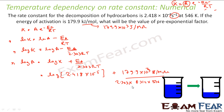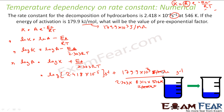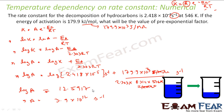This is in per second. The units work out: kelvin cancels with kelvin from R, and joules cancel, so the result is also in per second. When you solve this, log A is nothing but 12.5917. And A is nothing but the antilog of this, which is 3.9 into 10 to the power 12 per second.